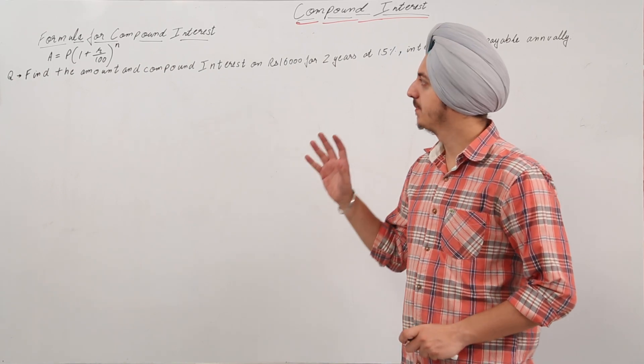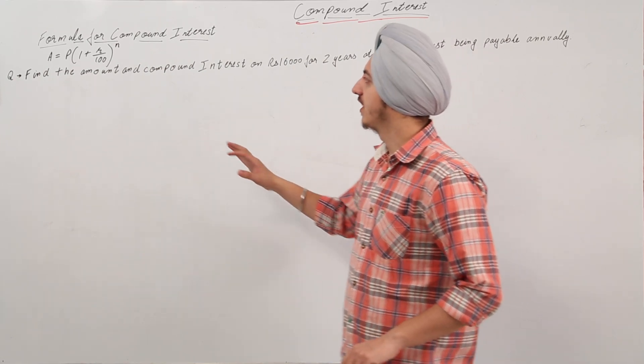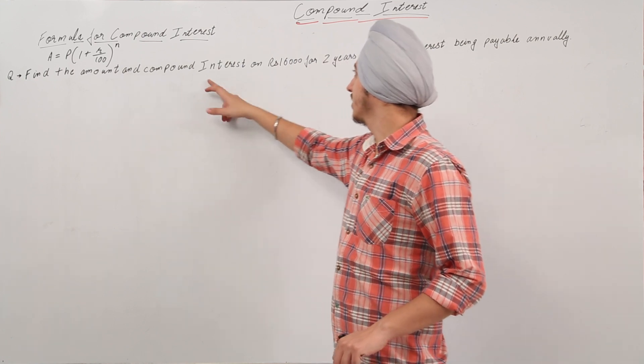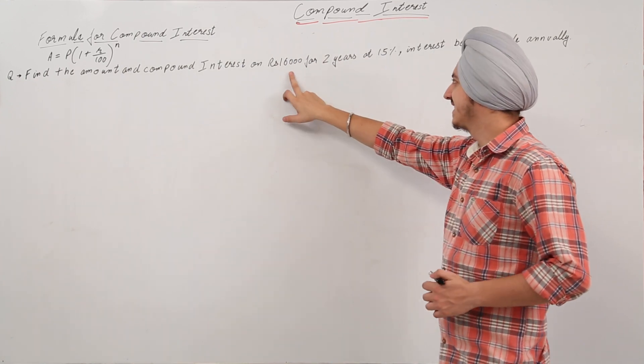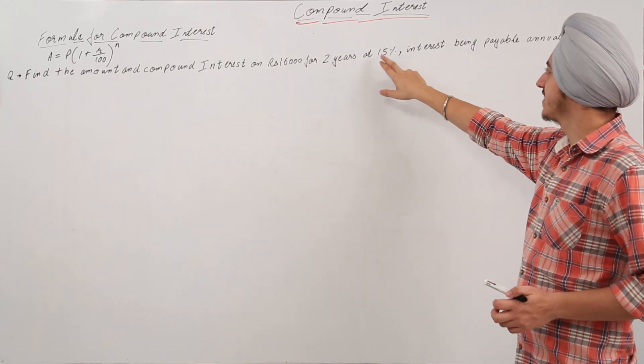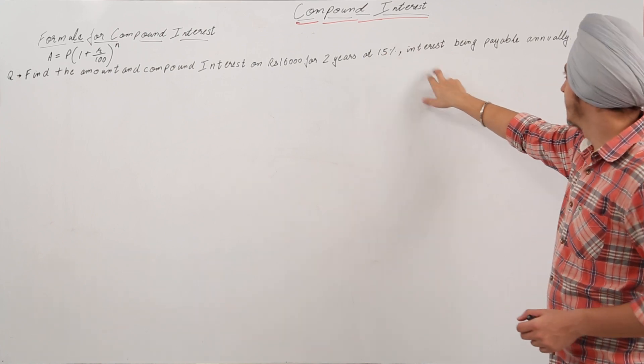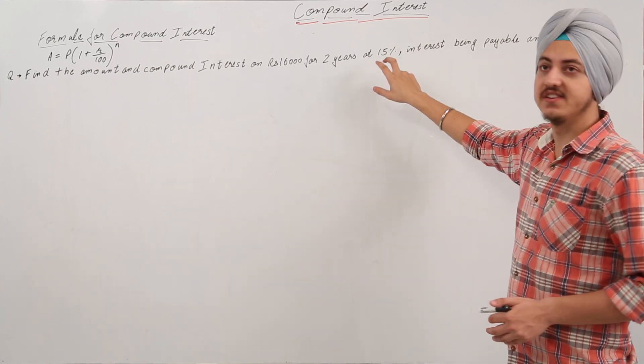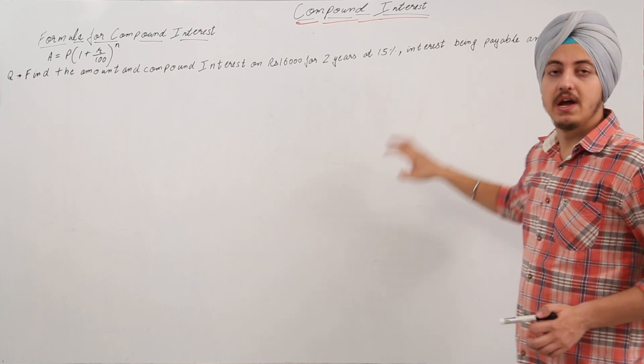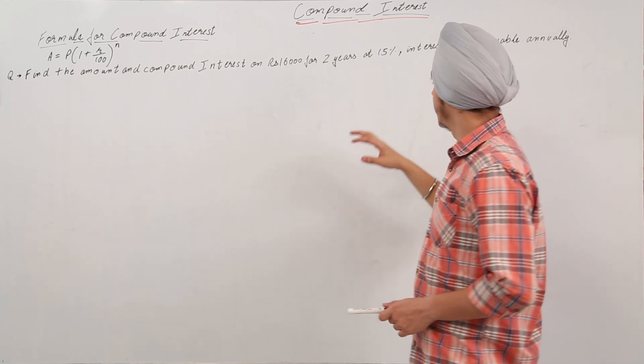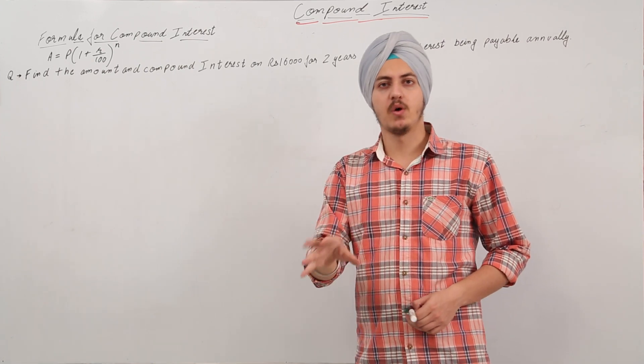Now we have a very basic question over here to find the amount and the compound interest on 16,000 rupees for two years at 15% interest being payable annually, that means 15% per annum, and the interest is again compounded annually.